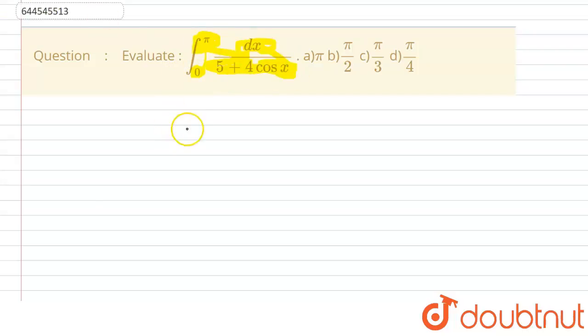So we have integral 0 to pi dx upon 5 plus 4 cos x.